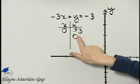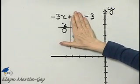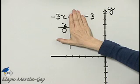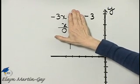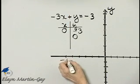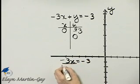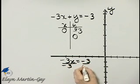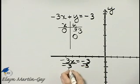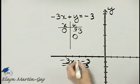What if y is 0? Well, if y is 0, I have negative 3x is equal to negative 3. Let's divide both sides by the coefficient of x, which is negative 3, and I'll have that x is 1.